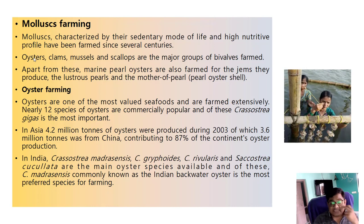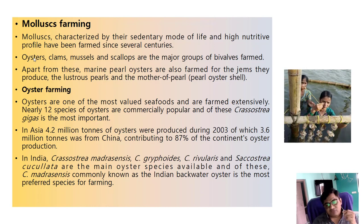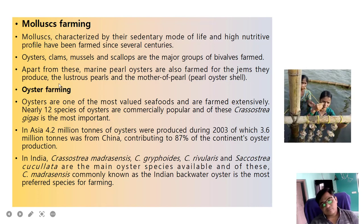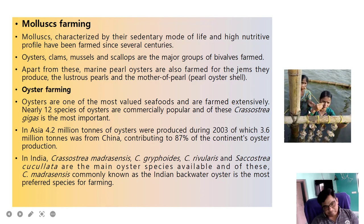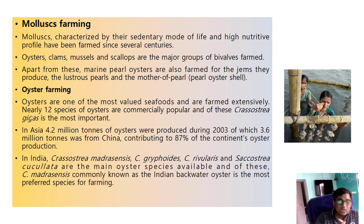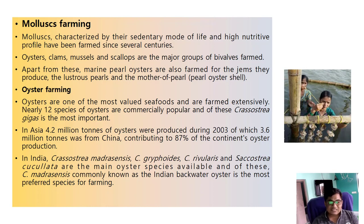Non-finfish culture: mollusk farming. Mollusks, characterized by a sedentary mode of life and high nutritive profile, have been farmed for several centuries. Oysters, clams, mussels, and scallops are the major groups of bivalves farmed. Marine pearl oysters are also farmed for the shells they produce and lustrous pearls and mother of pearl. Oyster farming is extensive — nearly 12 species are commercially popular, of which Crassostrea gigas is the most important. In Asia, 4.2 million tons of oysters were produced in 2003, of which 3.6 million tons came from China, contributing 87% of the continent's oyster production.